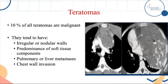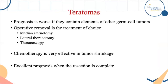90% of teratomas are benign, but 10% can be malignant. Signs of malignancy include irregular borders, pulmonary or liver metastasis, liver invasion, and more solid component with less fat content. Treatment is surgical removal via lateral thoracotomy, median sternotomy, or thoracoscopy. Oncological follow-up is essential if malignancy is confirmed. Avoid thoracoscopic rupture of an immature teratoma, as this risks recurrence and future malignancy. Prognosis after complete resection is excellent, justifying aggressive surgical approach. Other non-teratoma mediastinal germ cell tumors are all malignant; alpha-fetoprotein or beta-HCG is diagnostic, requiring chemotherapy followed by surgical resection.